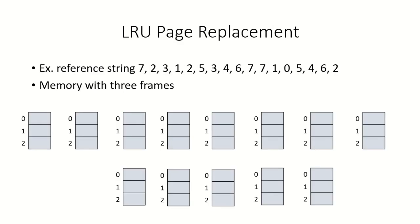Let us consider a reference string with a memory of 3 frames, numbered 0, 1, and 2. The first reference is for page 7. Since all frames are free, page 7 has to be brought from the hard disk to main memory, resulting in a page fault. Page 2 is referenced next — again a page fault, brought to main memory. Then page 3 is referenced — again a page fault, so 3 is brought in.